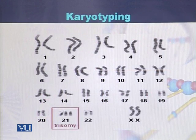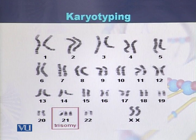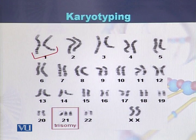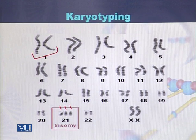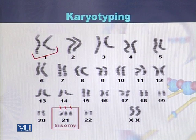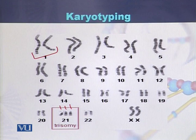Karyotyping is a procedure and technique used for identification of chromosomal abnormalities. In this diagram we can see the chromosomes displayed as homologous pairs, but in the case of chromosome 21, instead of two chromosomes there are three chromosomes. Three chromosomes at a given position indicate that the individual has trisomy.